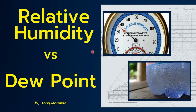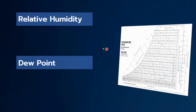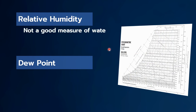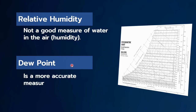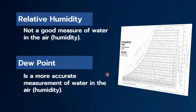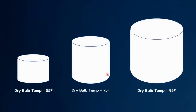Hi, this is Tony Mormino and in this video we're going to look at relative humidity versus dew point. The purpose of this presentation is to show you that relative humidity is really not a good measurement of how much water we have in the air — otherwise referred to as humidity — and that dew point is a very accurate measurement of how much water we have in the air. Let's look at why that is.